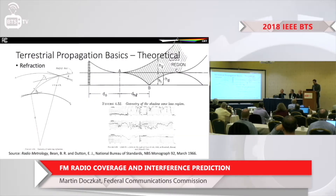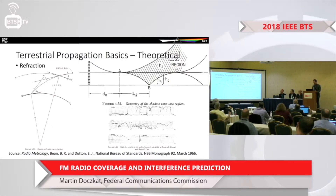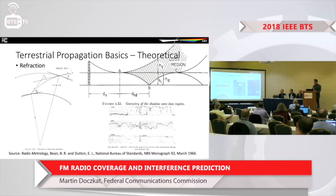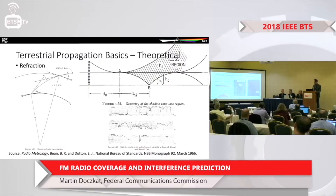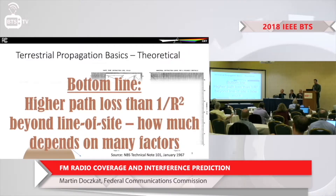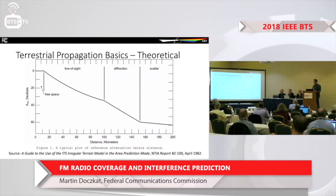Other propagation effects include refraction, where radio waves tend to bend along the Earth's curvature, though in some situations they can bend away from the Earth or get trapped in ducts. There's also diffraction, where waves bend around obstacles like a mountain and are received on the other side, or bend around the Earth itself. The bottom line is that trans-horizon paths tend to be attenuated worse than 1/r² or line-of-sight conditions.